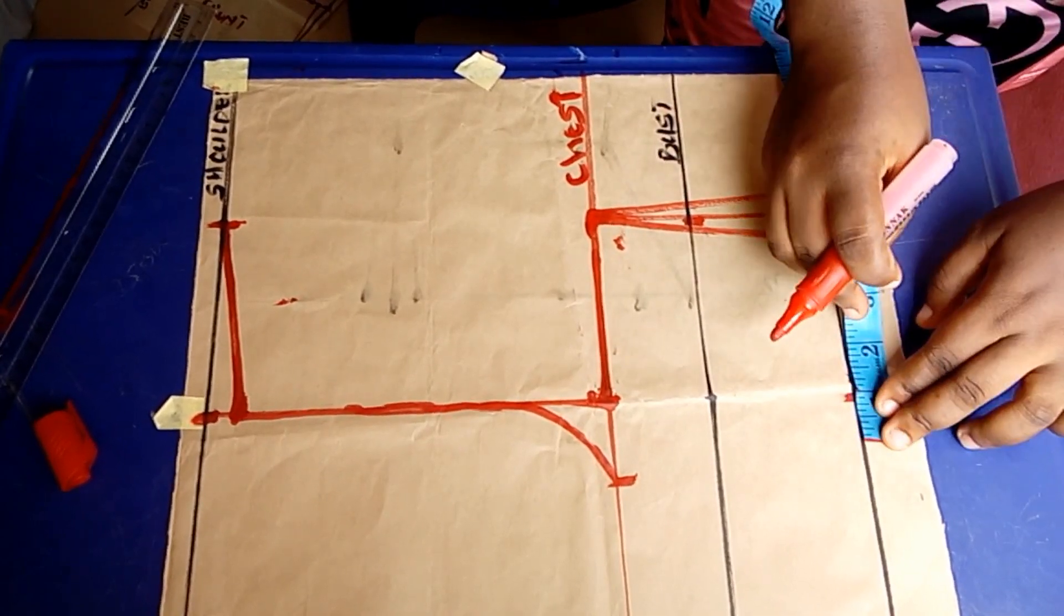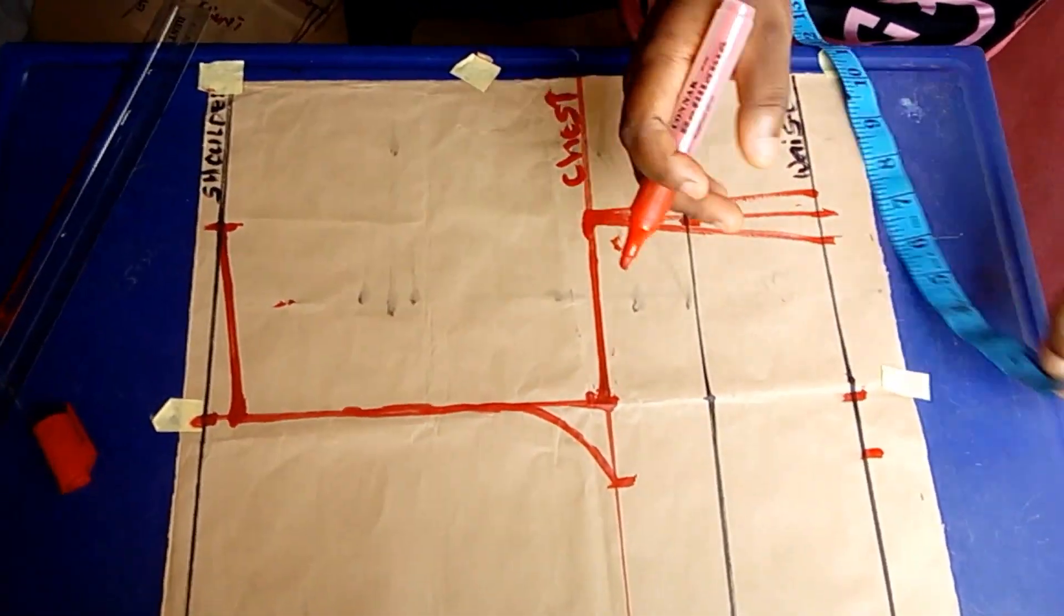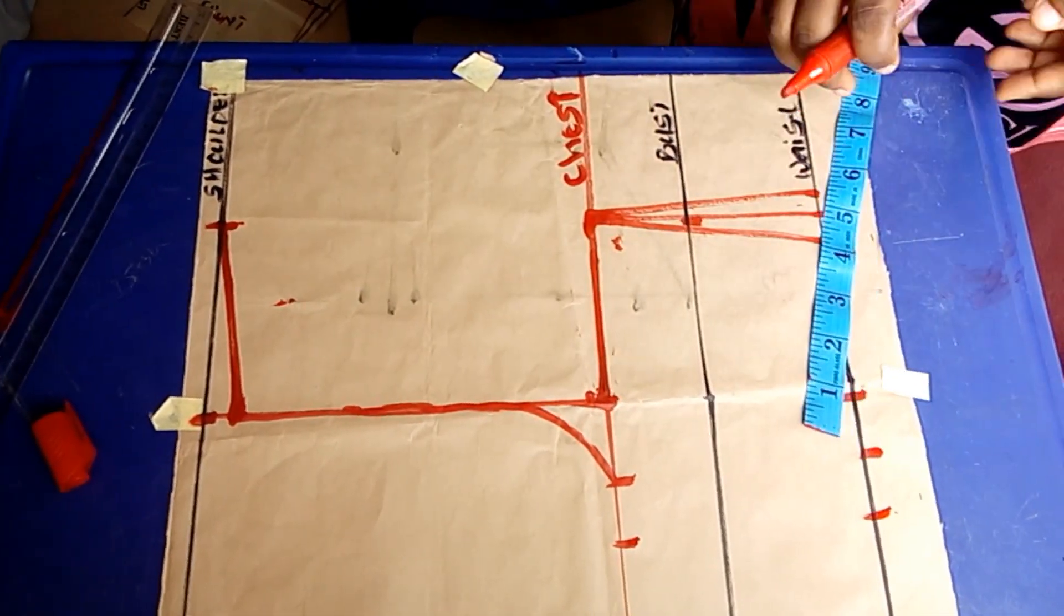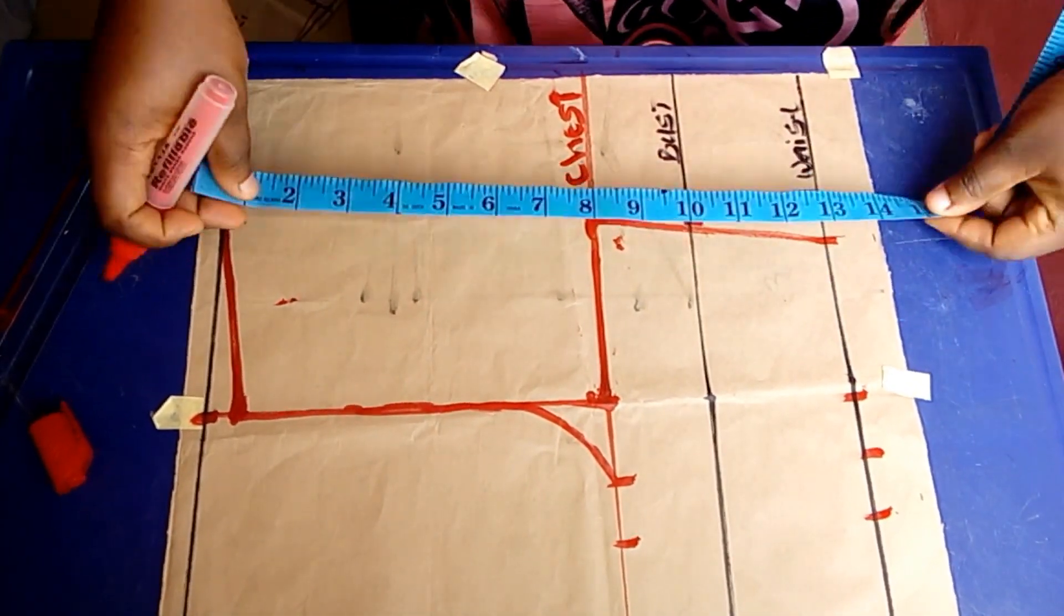Replacing the darts and then adding seam allowance of one inch back to the pattern.